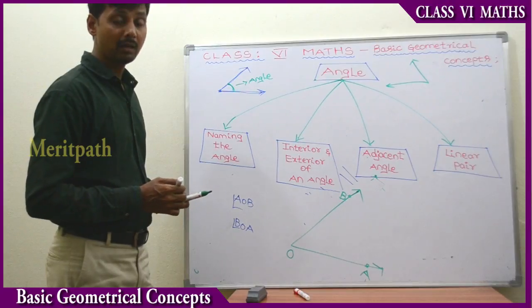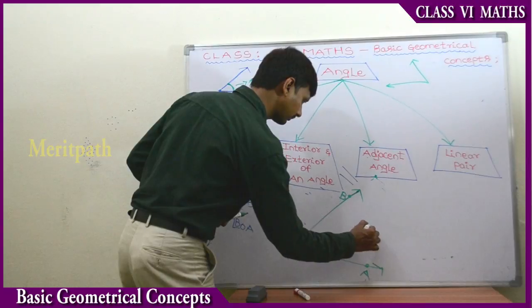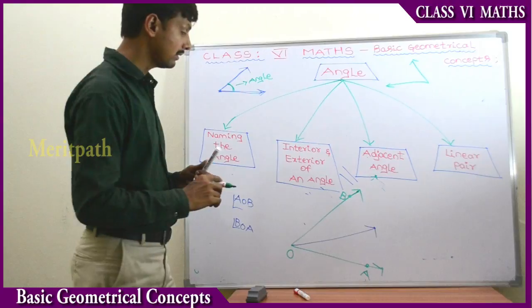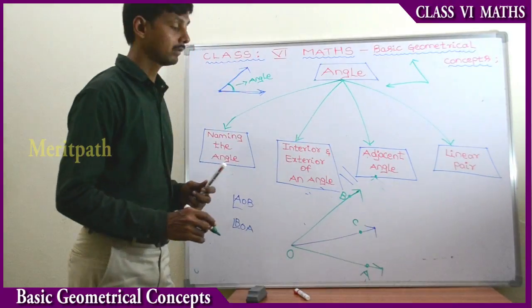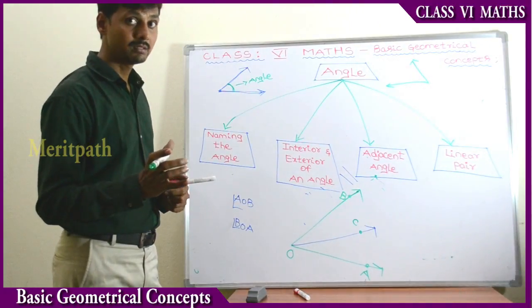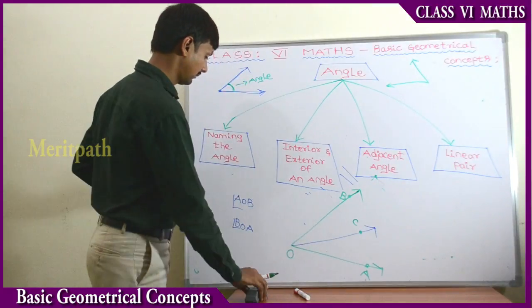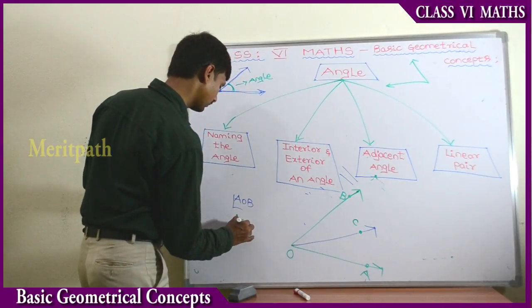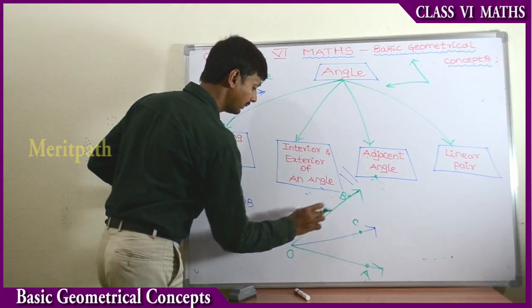If we take one more ray between the two rays of angle AOB, and name it C, we can observe there are totally three rays. We can see angle AOB, angle AOC, and angle BOC from this picture.